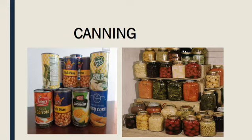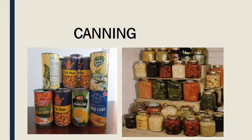Canning — in this method, food items are stored in sterilized, airtight containers. Cooked food items are stored in germ-free sterilized containers. These can be kept at room temperature, but once the can is opened, it must be stored in the fridge at cool temperature.